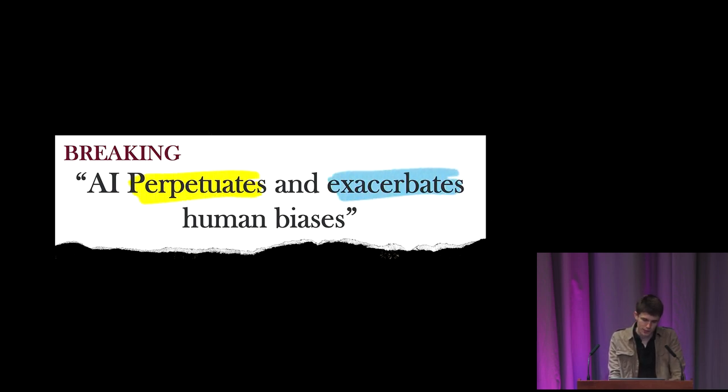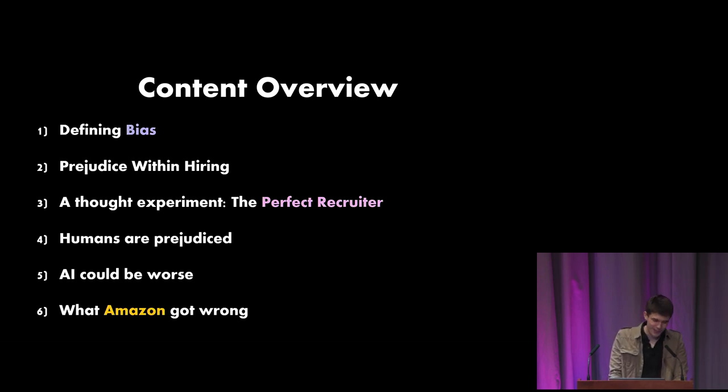Here's a quick content overview. We're going to start by defining bias. We'll talk about prejudice within hiring, which is a specific type of bias. Then we'll approach this topic from the perspective of a Bayesian network. And then that will help us compare it to our own flawed reasoning, why humans are prejudiced. And then finally, let's see whether AI could be worse. And let's finish all off with wondering what Amazon got wrong.